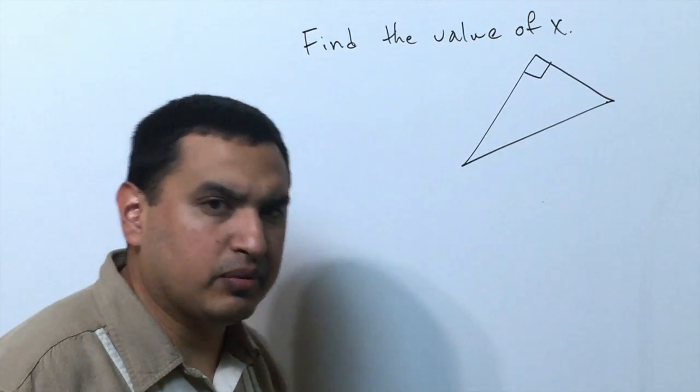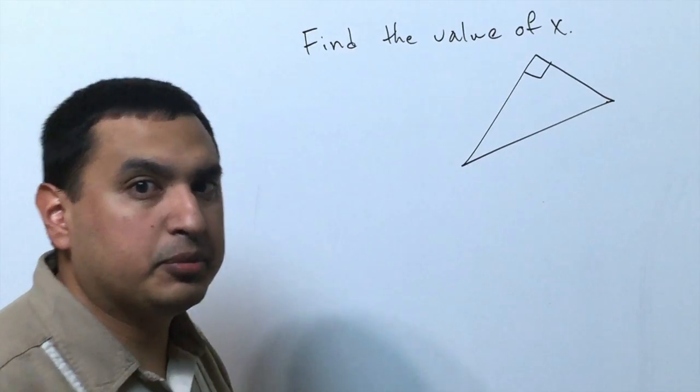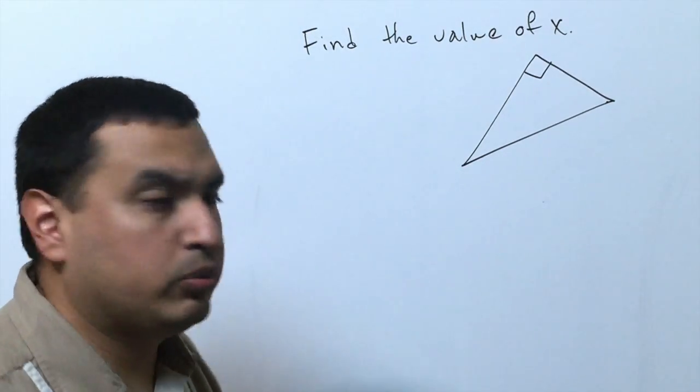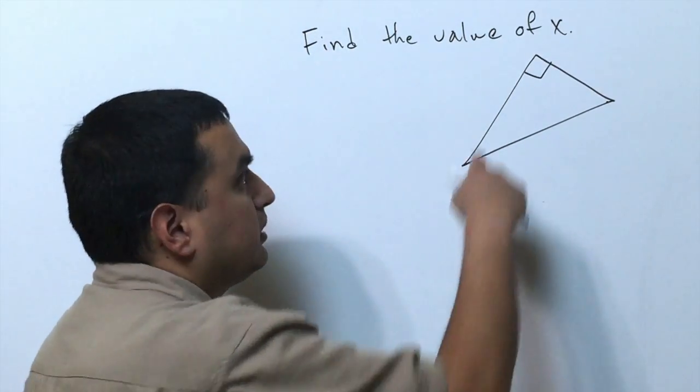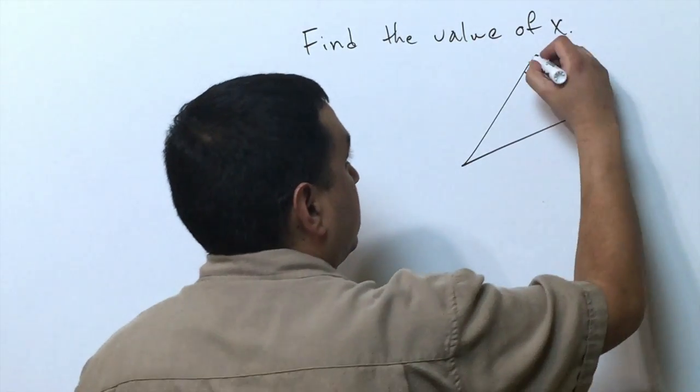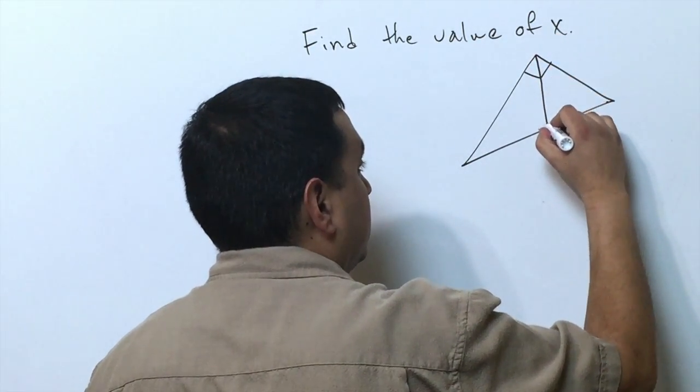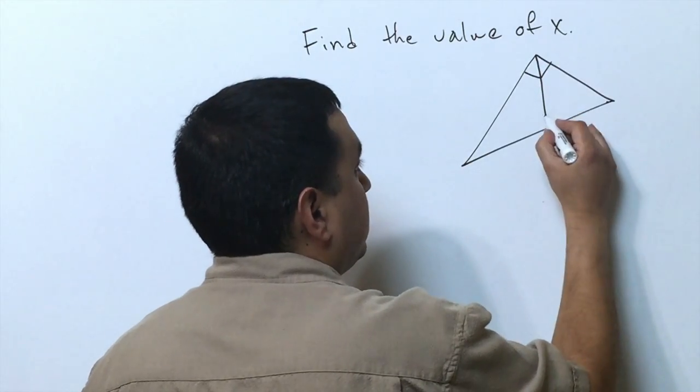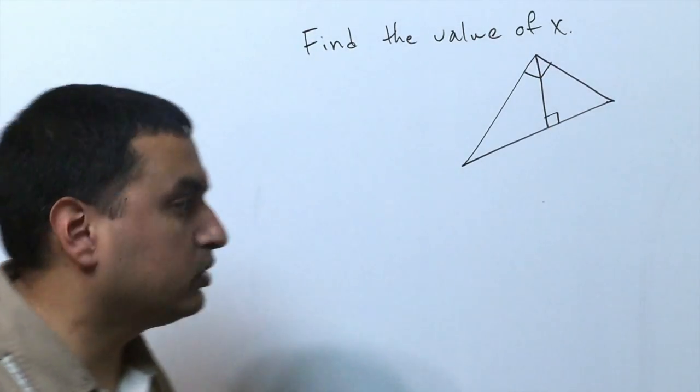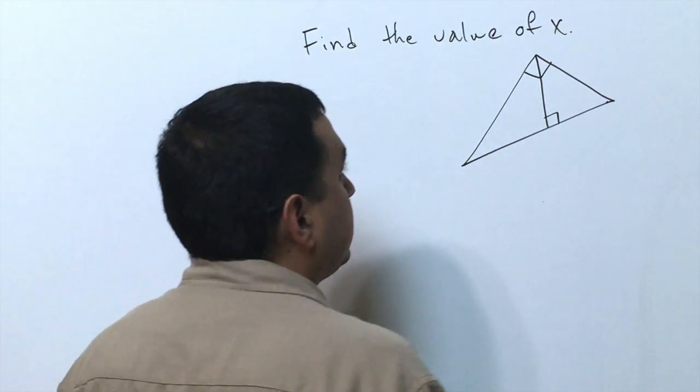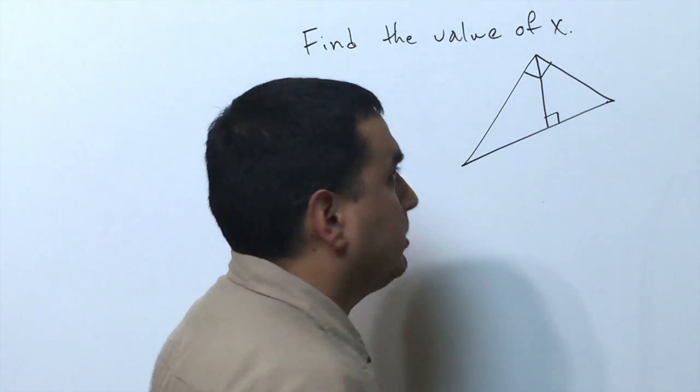At this point you might be wondering what the geometric mean has to do with similar right triangles. If you remember at the beginning of the lesson, we talked about the right triangle, and if I drew a line from the vertex opposite the hypotenuse perpendicular to the hypotenuse, all three triangles would be similar.